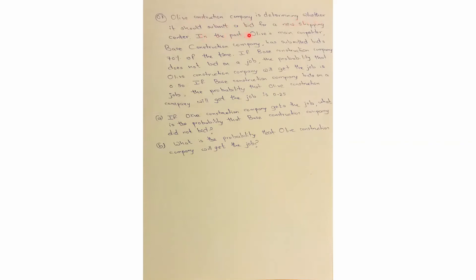Question 7: Olive Construction Company is deciding whether to submit a bid for a new shopping center. Its competitor, Base Construction Company, has submitted bids 70% of the time. If Base does not bid, the probability Olive gets the job is 0.50. If Base does bid, the probability Olive gets the job is 0.25. What is the probability that Base did not bid given Olive gets the job? And what is the probability Olive gets the job?